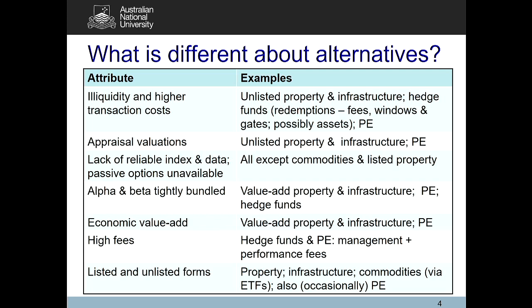For hedge funds there are multiple layers of illiquidity costs. Another cost comes from fees — hedge funds and private equity have both management and performance fees, making them more expensive to invest in. Unlisted property and unlisted infrastructure are quite illiquid, so when you sell them you will often have to take a haircut. For private equity, there is a secondary market but it isn't liquid, so you typically have to take a discount to net asset value if you want to cash out.